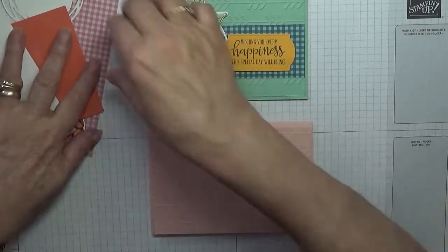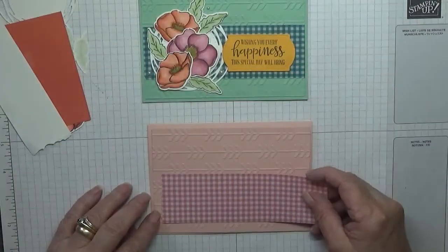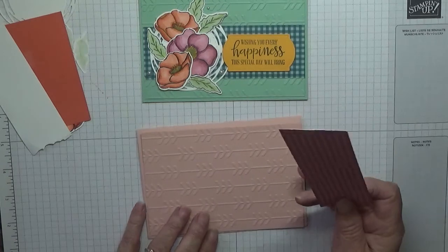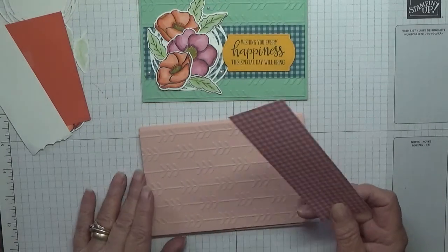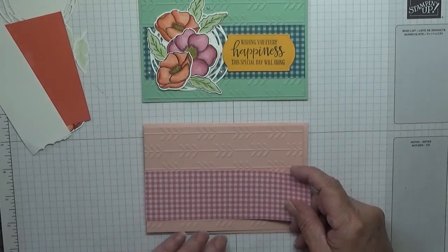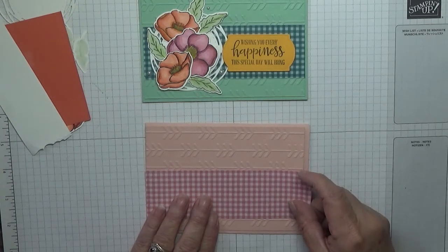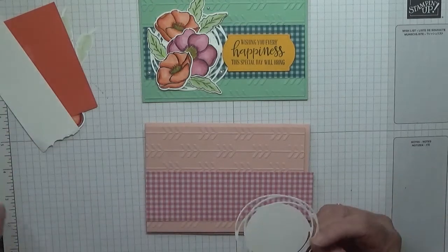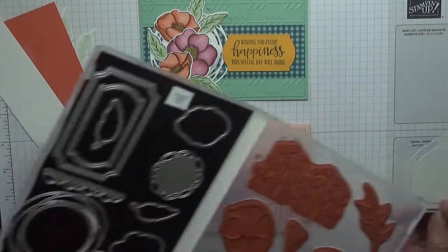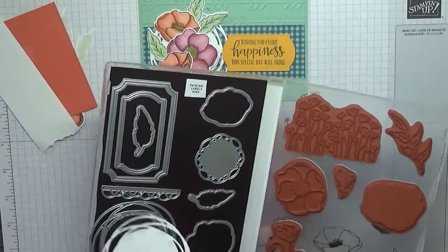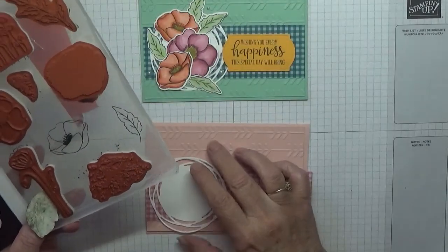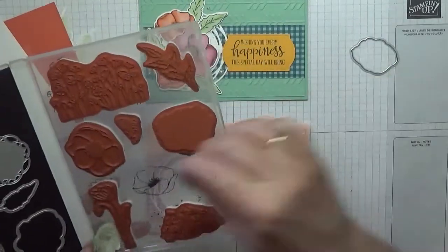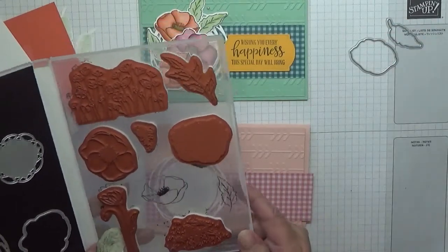I've also got a piece of checkered paper. This one is from the ink colors, the retiring ink colors, so I thought I'd use it and it is Rococo Rose ink color and that will go across there. I've also got one of these which is out of the Painted Poppy die set. I've already cut it out because it won't go in my little sidekick.